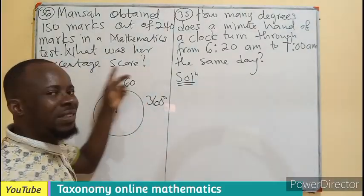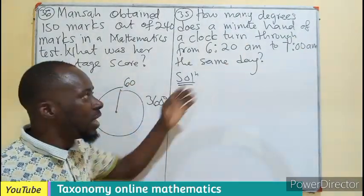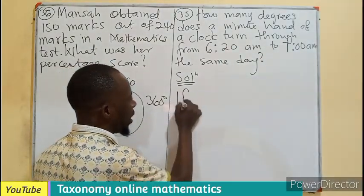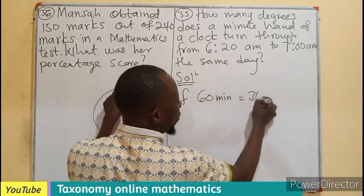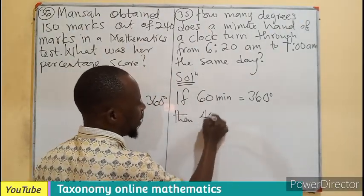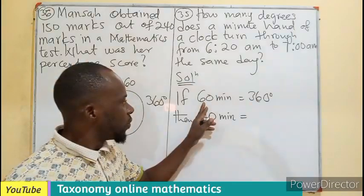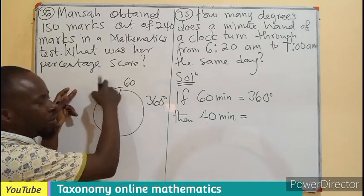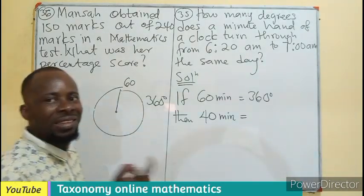The minute hand is moving 60 minutes to give us one hour. So if 60 minutes is giving you 360, you can tell how many degrees would the 40 minutes give you. If 60 minutes would give me 360 degrees, then your 40 minutes will give you less than that because you're not going to have a complete movement. Your degree must be less than 360.